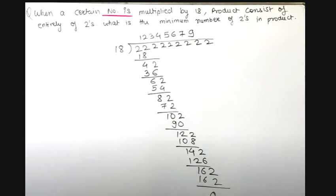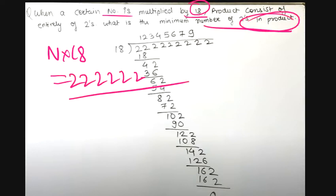The question is: when a certain number is multiplied by 18, the product consists entirely of 2's. What is the minimum number of 2's in the product? So how will we solve it? What will you do?